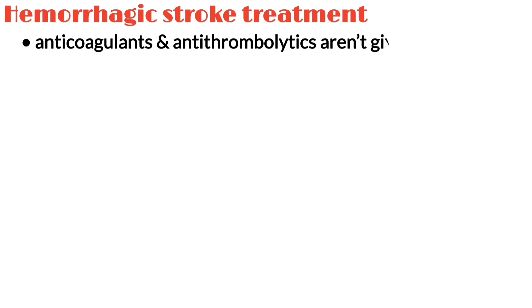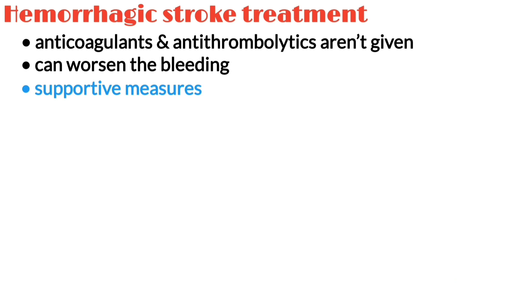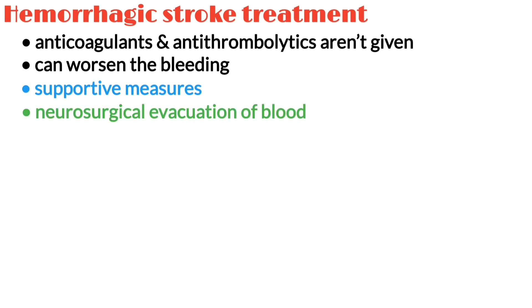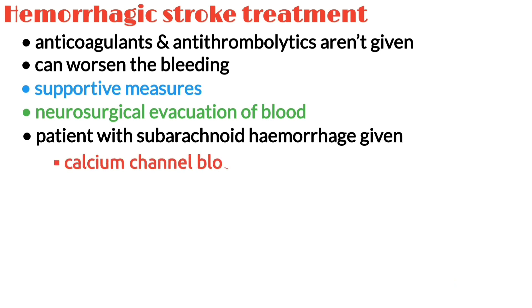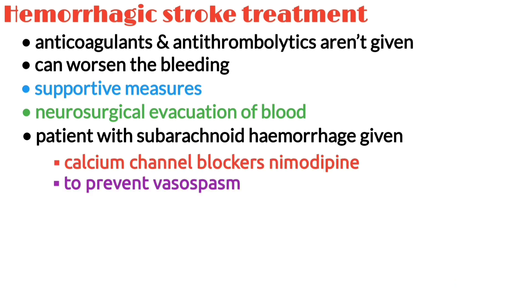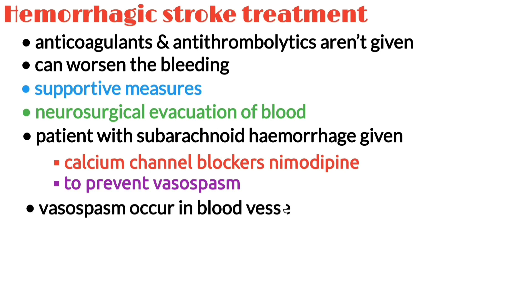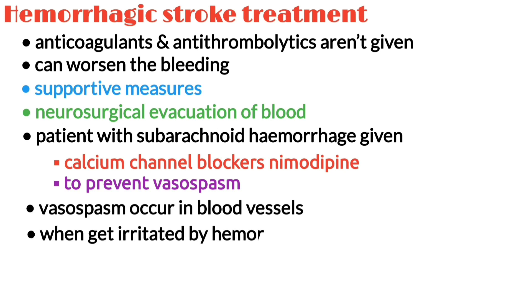In a hemorrhagic stroke, anticoagulants and antithrombolytics are not given because they can worsen the bleeding. Hemorrhagic strokes are treated with supportive measures and neurosurgical evacuation of blood. Patients with subarachnoid hemorrhage are also given the calcium channel blocker nimodipine to prevent vasospasm, which sometimes occurs in blood vessels irritated by the hemorrhage.